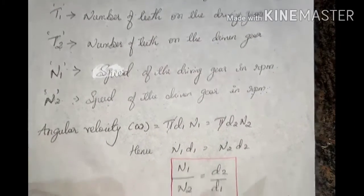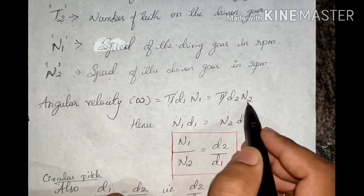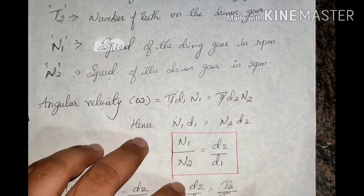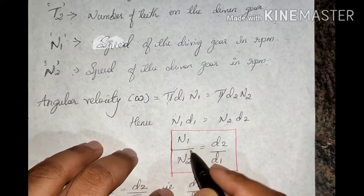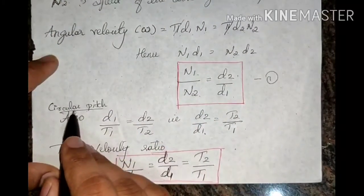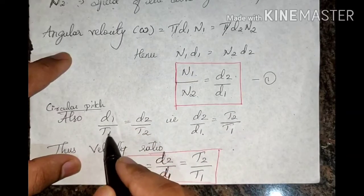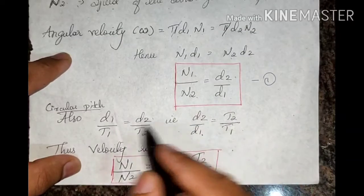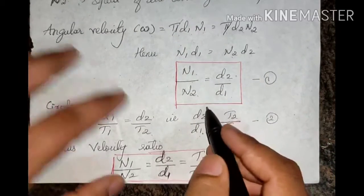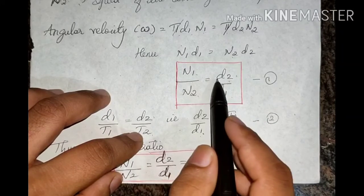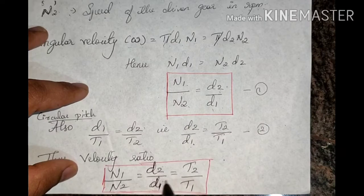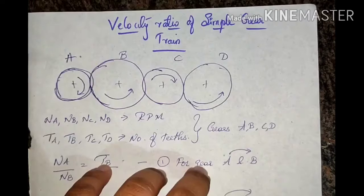The angular velocity equation gives us: π·D1·N1 = π·D2·N2, so N1/N2 = D2/D1 — this is equation 1. Since the circular pitch is the same for both meshing gears, D1/T1 = D2/T2, which gives D2/D1 = T2/T1 — this is equation 2. Combining both equations: N1/N2 = D2/D1 = T2/T1. This is the velocity ratio equation for a gear drive.